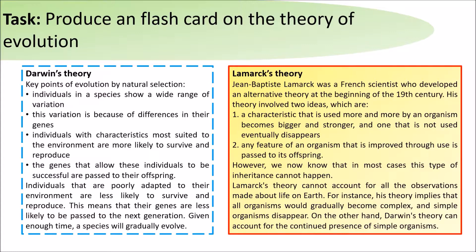However, we now know that in most cases this type of inheritance does not happen. Lamarck's theory cannot account for all the observations made about life on Earth.